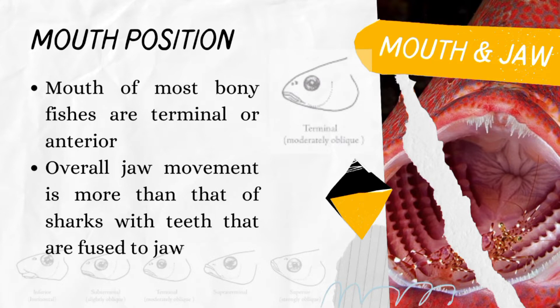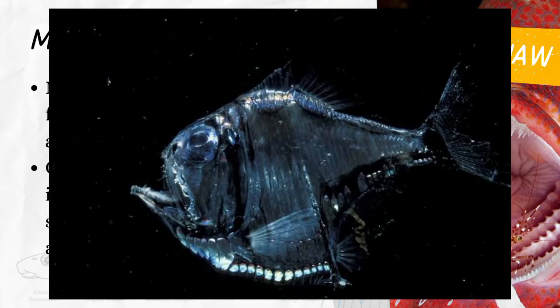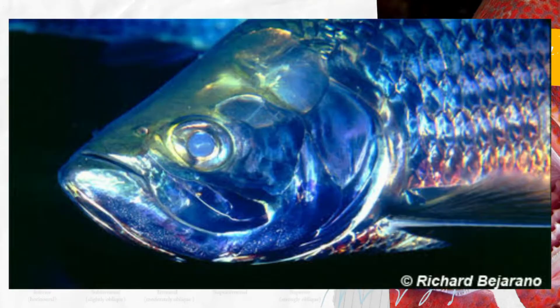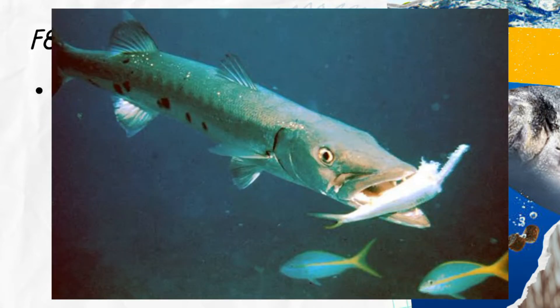Mouth shape, size, and position are good indications of bony fish feeding habits. Most bony fish have a mouth at the front end of the head. Some bottom-feeding species have mouths on the underside of the snout angled toward the bottom, while other surface-feeding species have mouths that angle upwards.